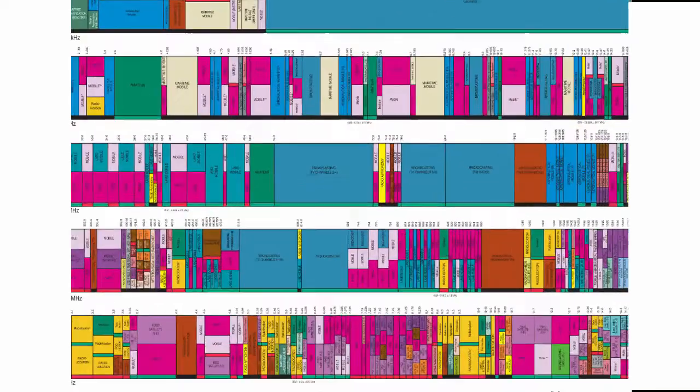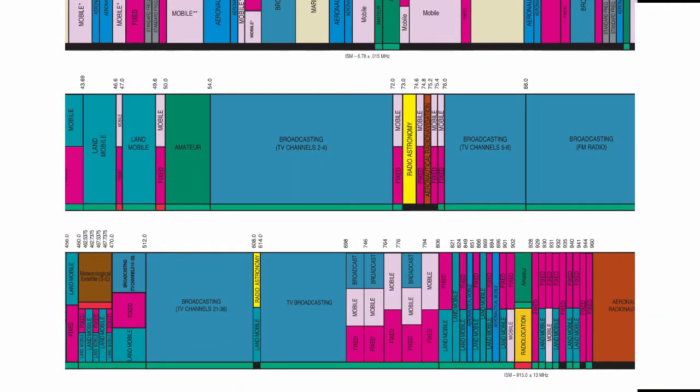So if you zoom in here, for example in the range let's say 54 to 72 megahertz, that's broadcast TV channels two, three, and four. And then you see there's a fixed and mobile, there's one megahertz, then there's a yellow band there for radio astronomy.